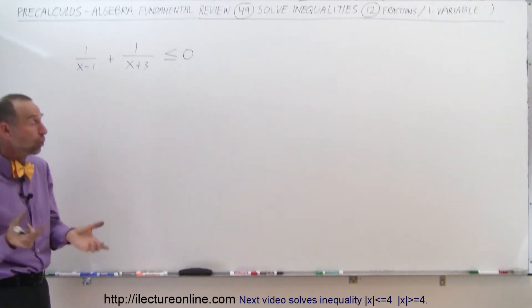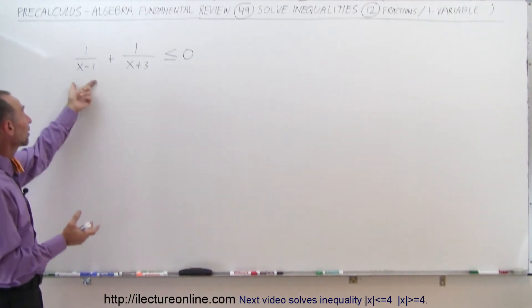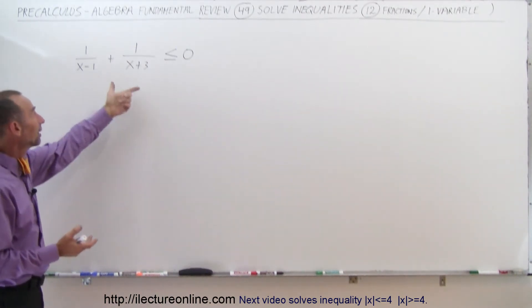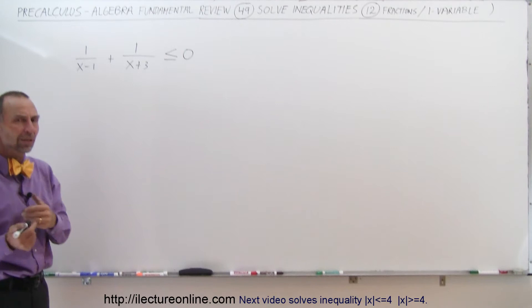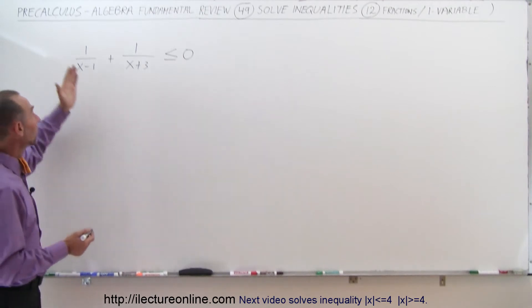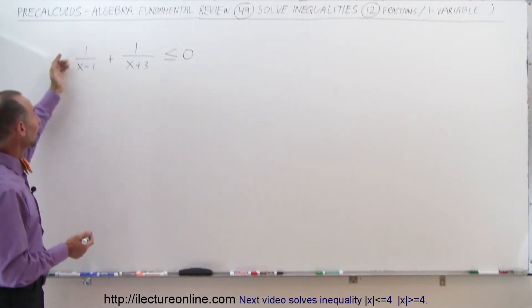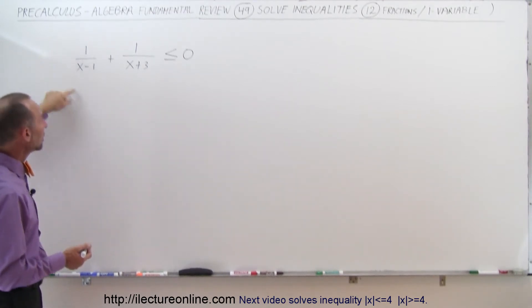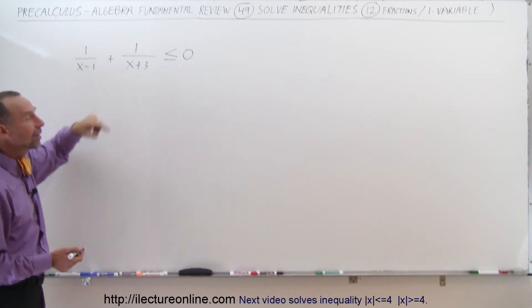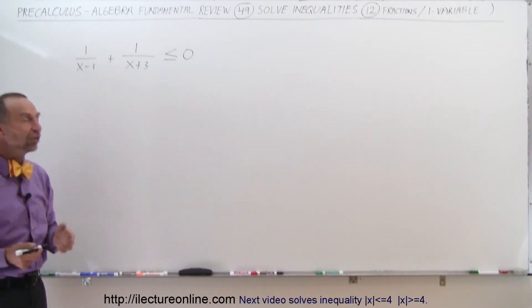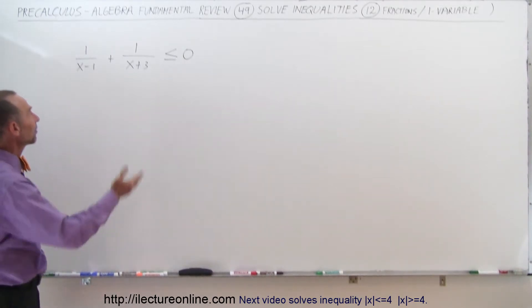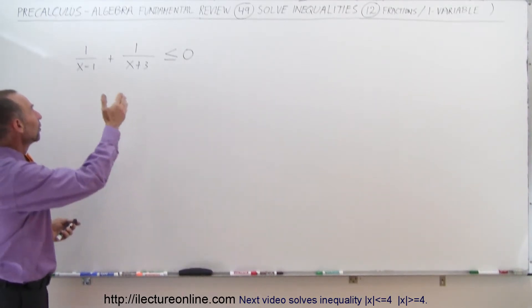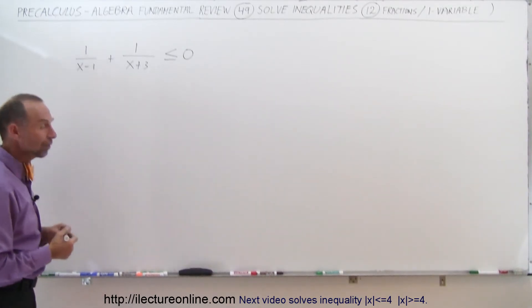In this case, a common denominator is going to be the product of (x minus 1) times (x plus 3), which means the left fraction will have to be multiplied times (x plus 3) divided by (x plus 3), and the right fraction needs to be multiplied times (x minus 1) over (x minus 1).